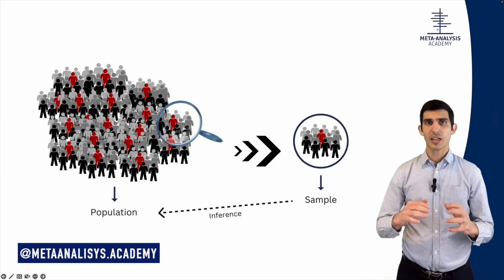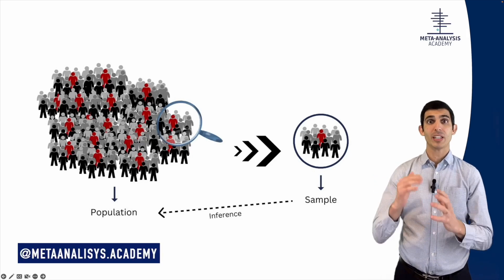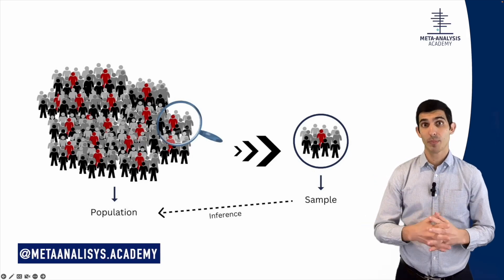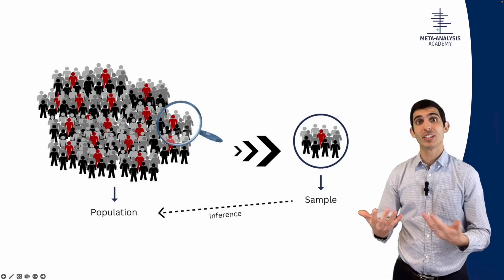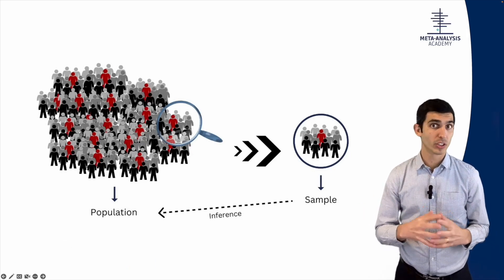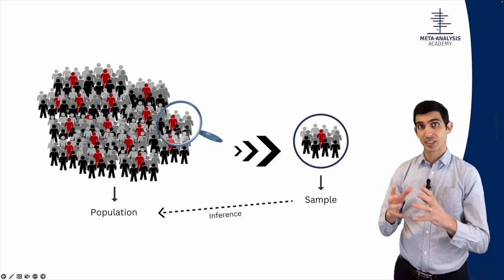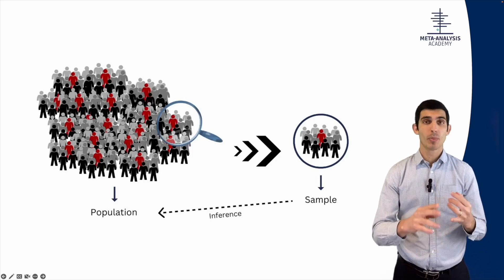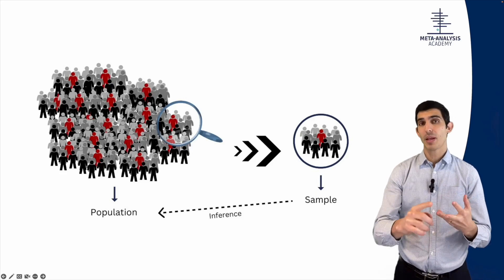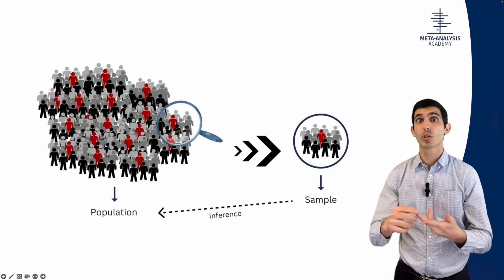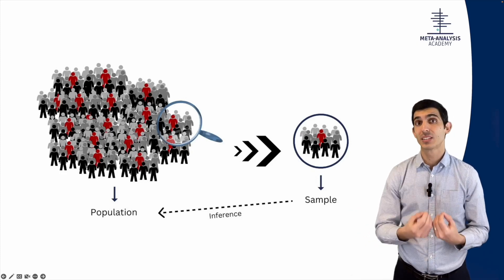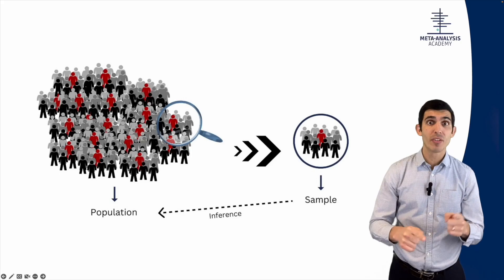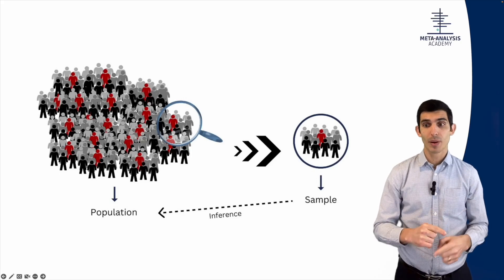If I want to study a certain population, like patients with diabetes — I want to test a new drug in patients with diabetes — I can't study all the patients with diabetes in the world. There's just no way. I have to select a sample of this target population. This sample may be from one hospital, from multiple hospitals in one country, multiple countries all over the world, but it's still a sample. And we're going to use the results in the sample to make an inference, to make a conclusion about the population.